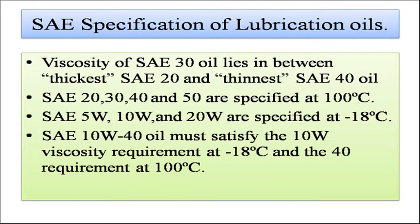Now we see how lubricating oils are specified. SAE (Society of Automotive Engineers) grades oils as SAE 20, 30, 40, etc. SAE 30, for example, lies between SAE 20 (thickest) and SAE 40 (thinnest) with a certain viscosity, all specified at 100°C. Some oils are specified with 'W' for winter, at minus 18°C — for example, SAE 10W-40 means the 10W viscosity requirement is satisfied at minus 18°C and the 40 requirement at 100°C.